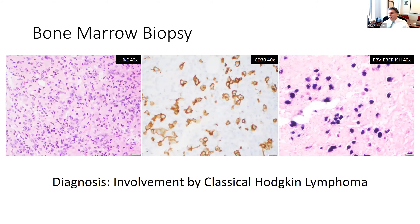Moving briefly to Kaposi sarcoma: the incidence in HIV is about 500-fold more than in the general population — a dramatic improvement from 30,000 times more previously, but still far more common in the HIV population than the general population.